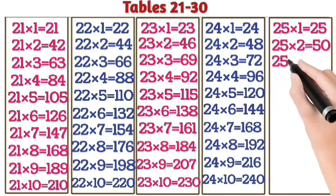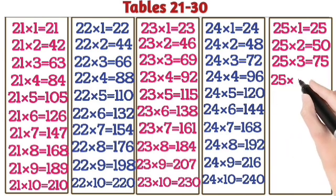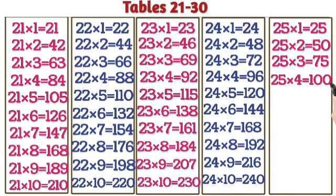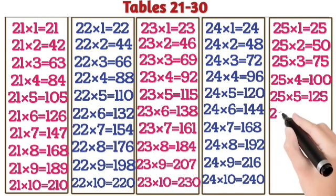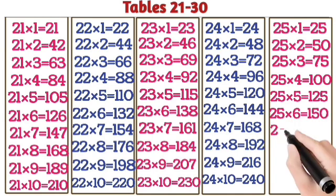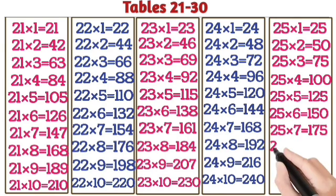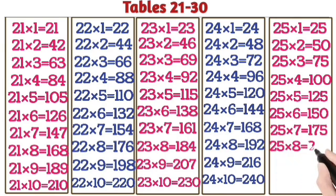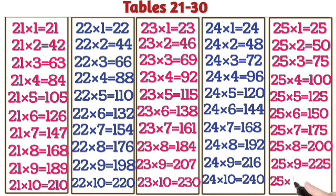25 ones are 25. 25 twos are 50. 25 threes are 75. 25 fours are 100. 25 fives are 125. 25 sixes are 150. 25 sevens are 175. 25 eights are 200. 25 nines are 225. 25 tens are 250.